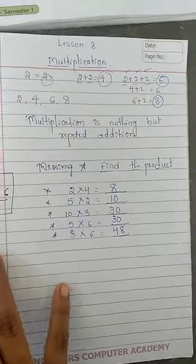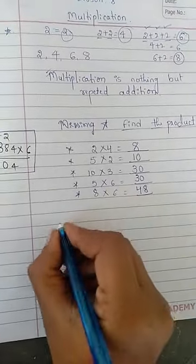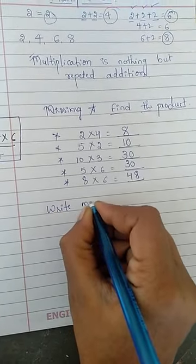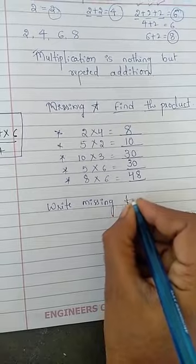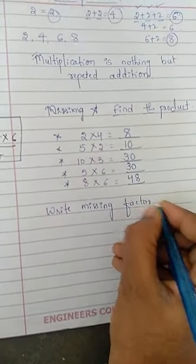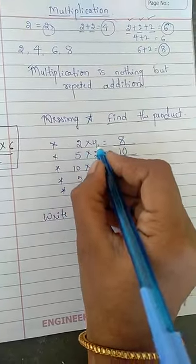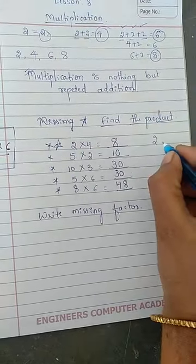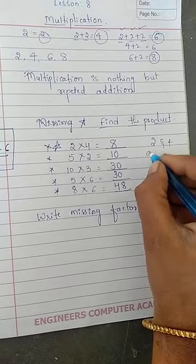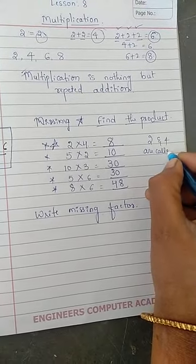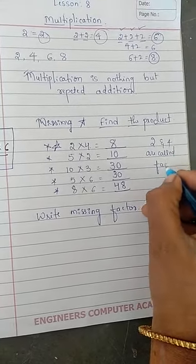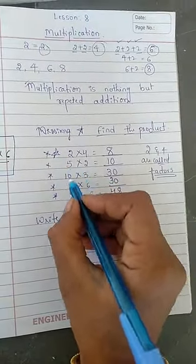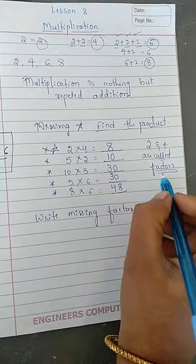The next one is write missing factor. And one more thing. See 2 and 4 here. In this first one I am taking. In the first one 2 and 4 are called factors. I hope you understood. These whatever the numbers are there here, these two are called factors.